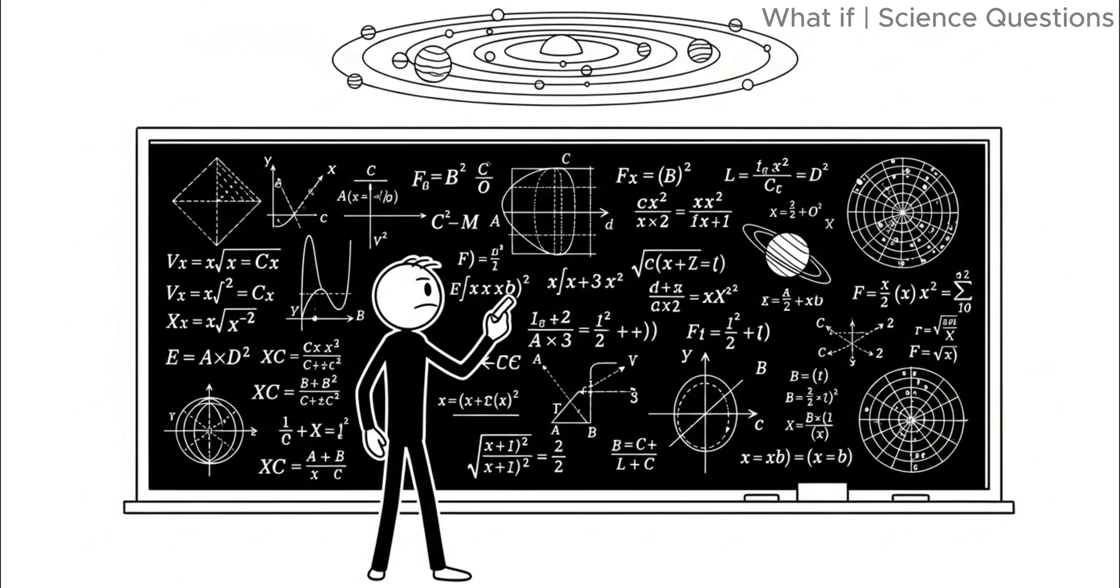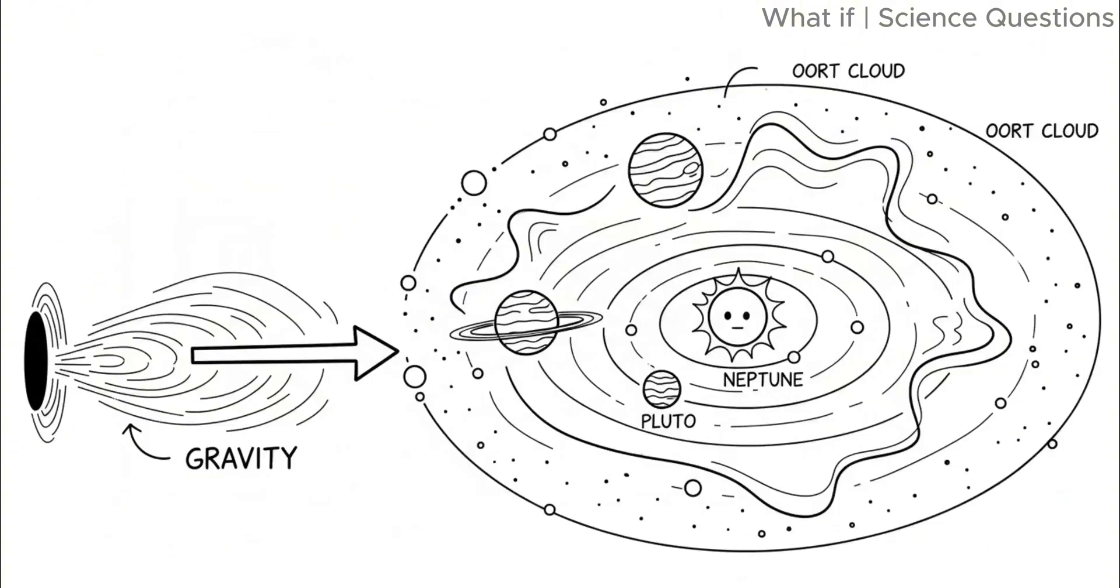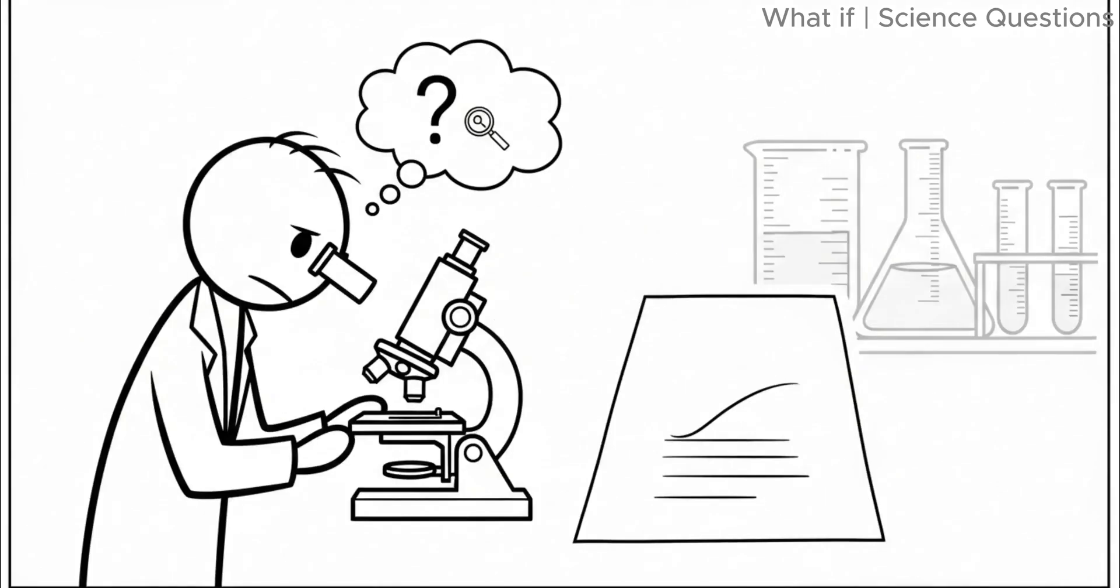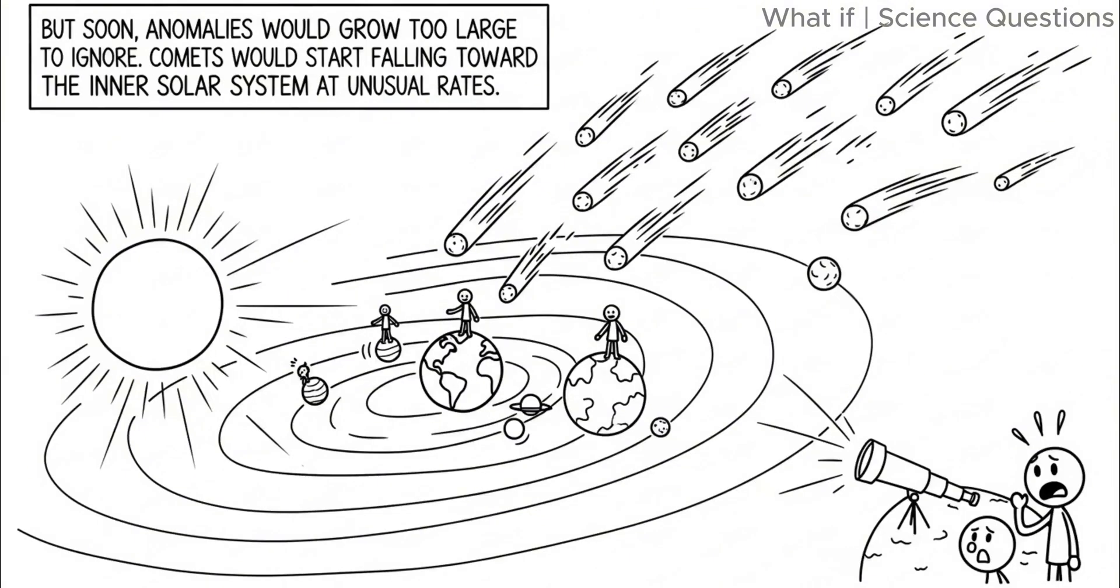The first warning would come not from telescopes, but from math. Astronomers track the movements of stars and planets with incredible precision. If a black hole entered the outskirts of our solar system, its gravity would begin subtly disturbing the orbits of distant objects like Neptune, Pluto, and even comets in the Oort cloud. At first, these changes would be tiny, so small they could be mistaken for measurement errors. But soon, anomalies would grow too large to ignore.